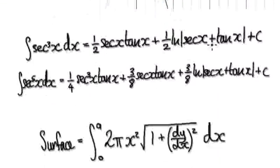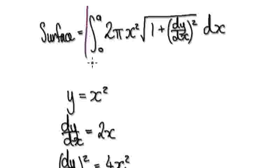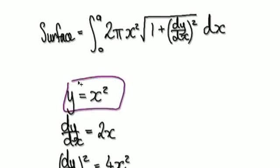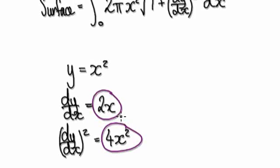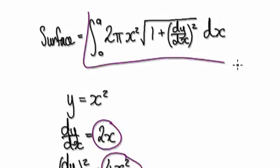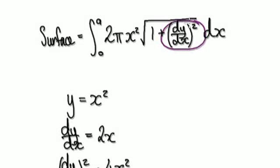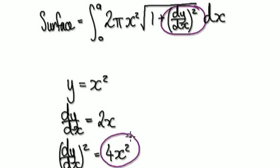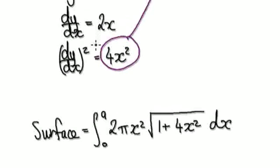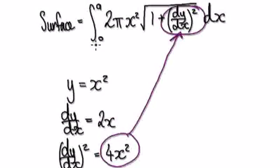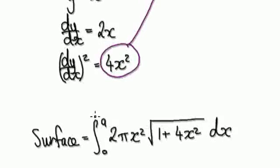The surface area is given by this expression. Now, if you look at this, you're going to need dy/dx. So let's work out dy/dx. We'll also need to square it. Starting with y = x squared, dy/dx equals 2x. Squaring it gives you 4x squared. So going back to the surface area formula, we now know that this term is 4x squared, so we can substitute it in. The surface area is now given by this updated expression.